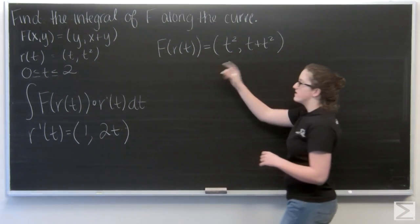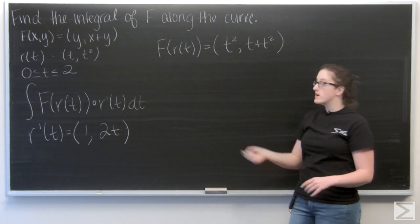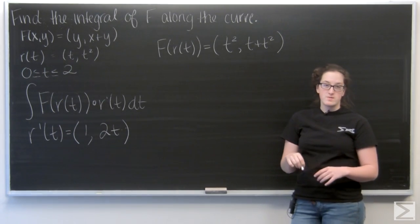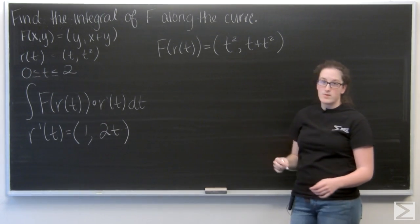So I have f of r of t is t squared, t plus t squared. So let's go ahead and dot that with r prime.